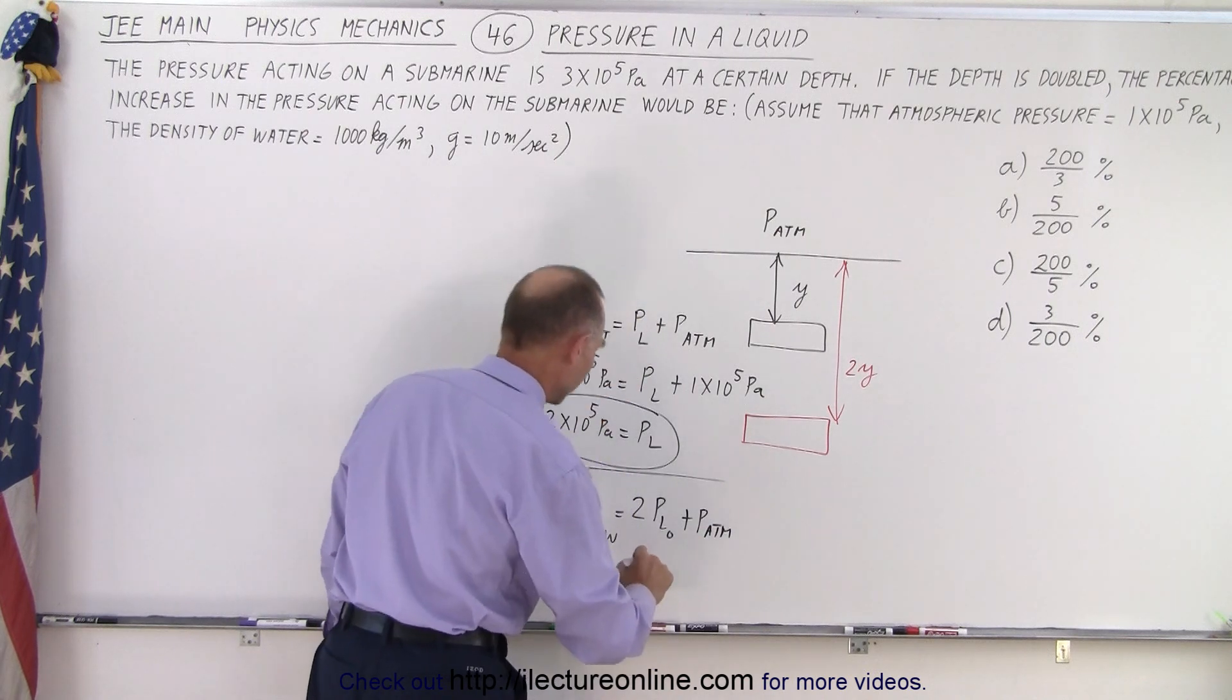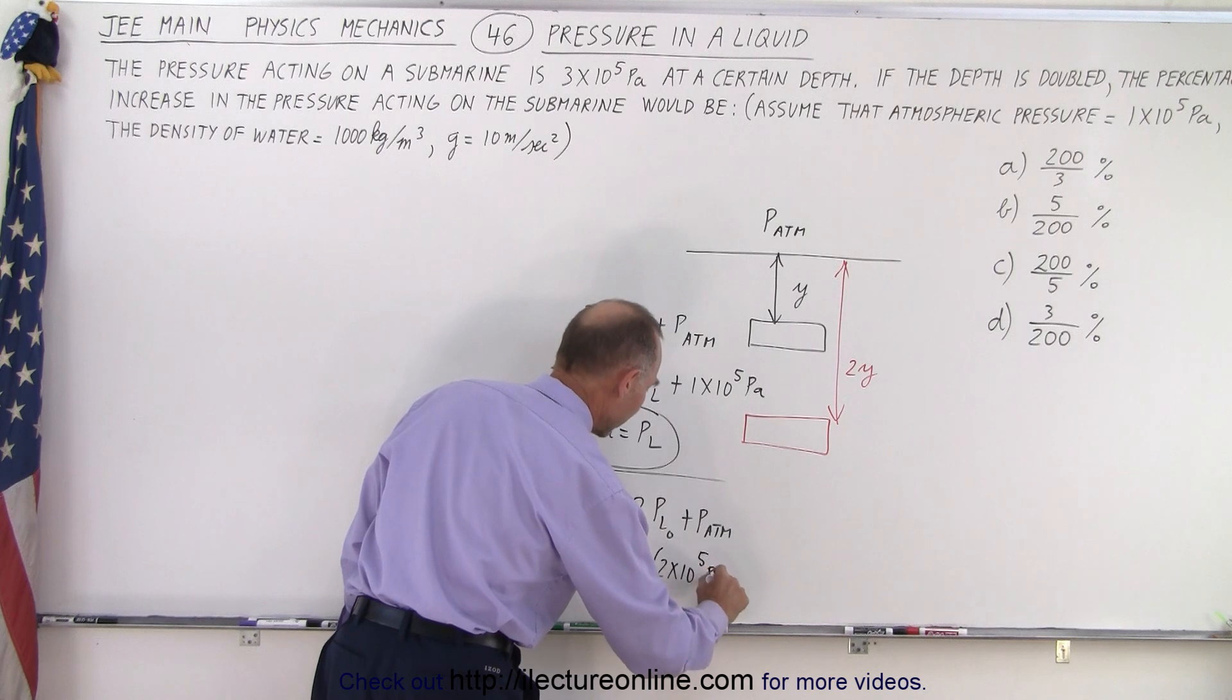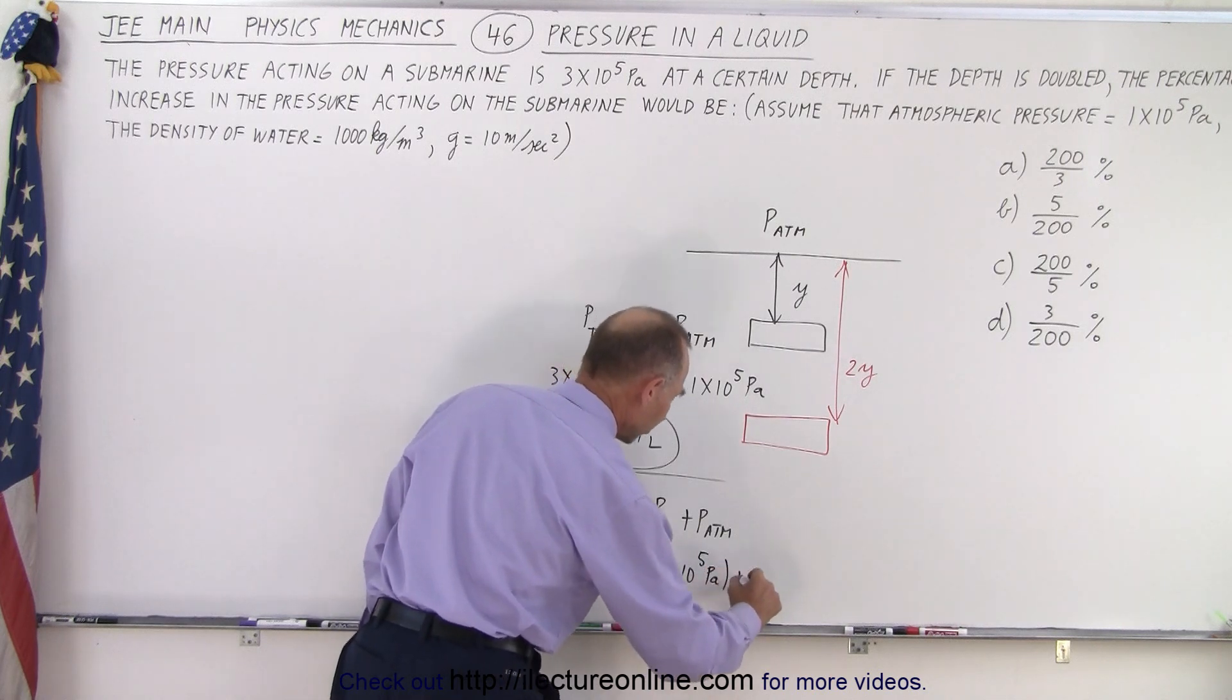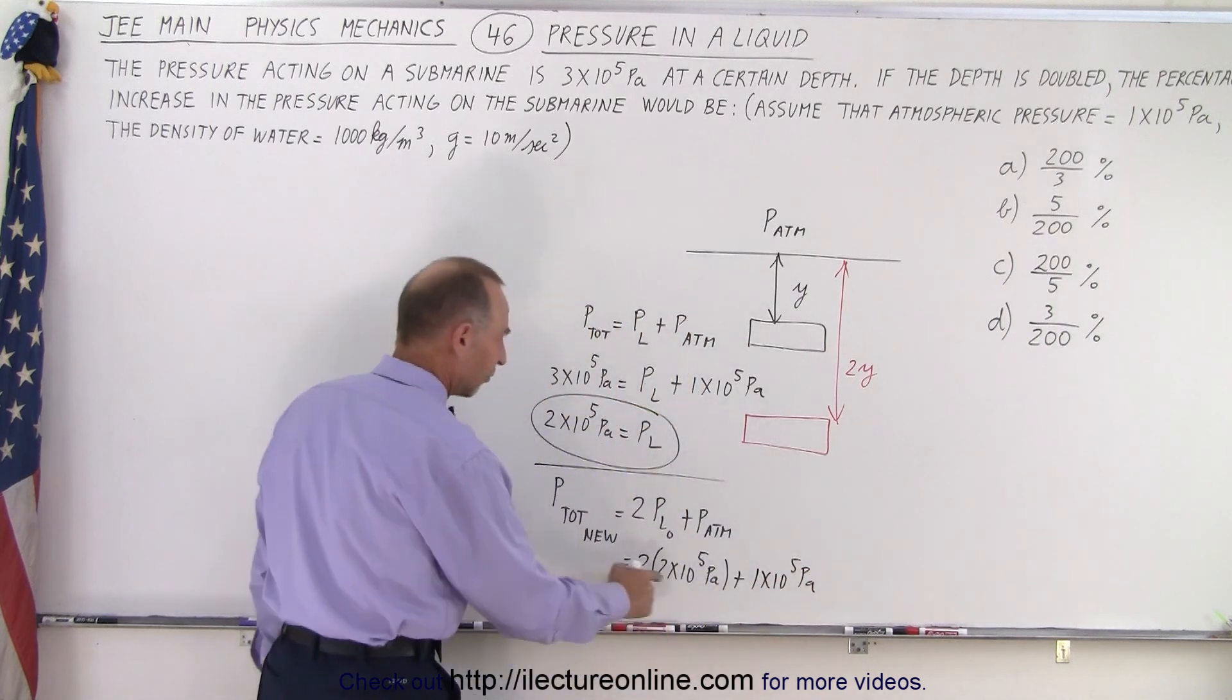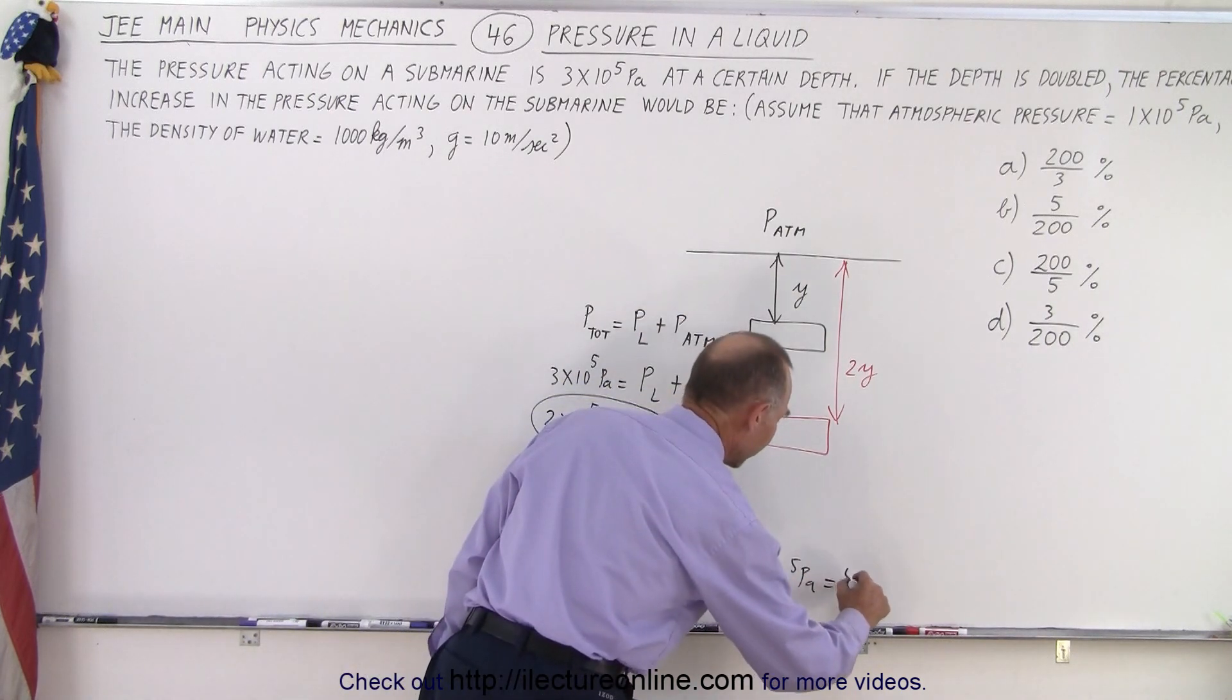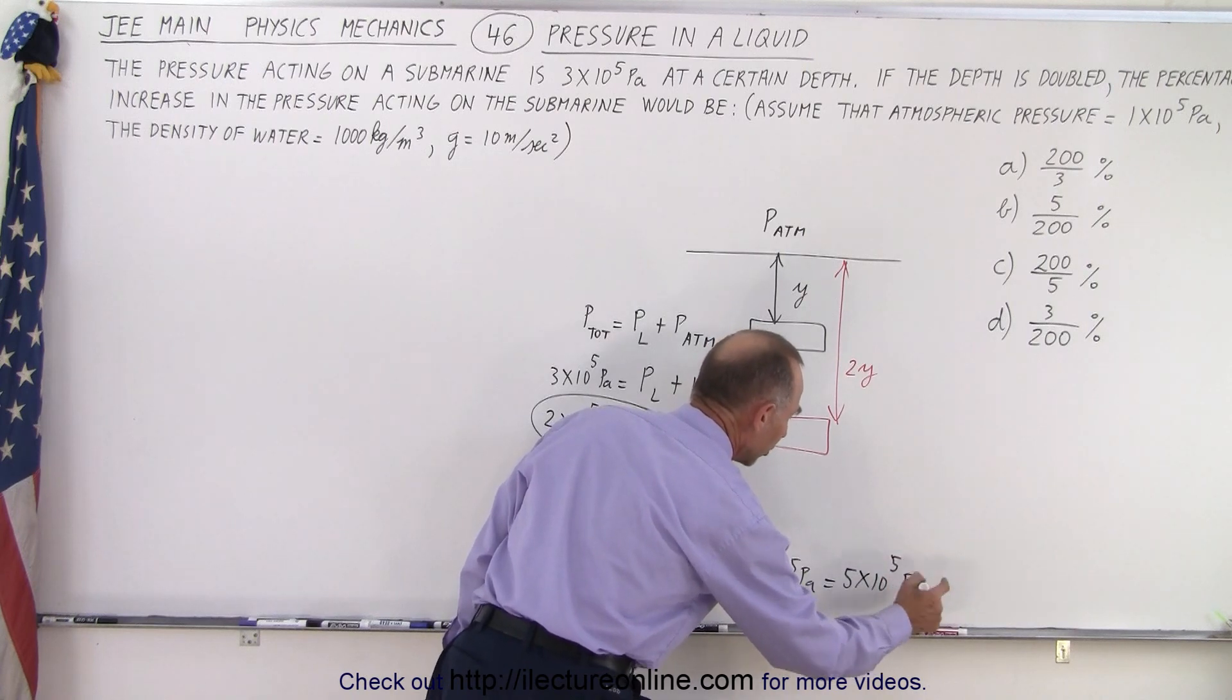In this case it will be 2 times 2 times 10 to the fifth pascals, plus an atmospheric pressure of 1 times 10 to the fifth pascal. So that's 4 plus 1, that would be equal to 5 times 10 to the fifth pascal. That would be the new pressure.